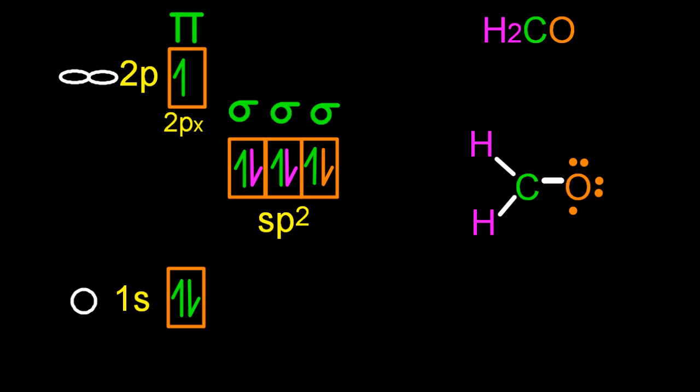And this oxygen still has an unpaired electron, and so does the carbon. And so that's in the p orbital. It's actually in the p orbital for both of them. So when those electrons pair up, that second bond is going to be the pi bond.